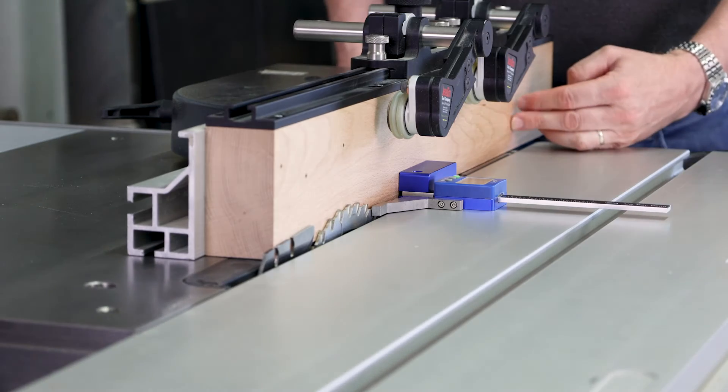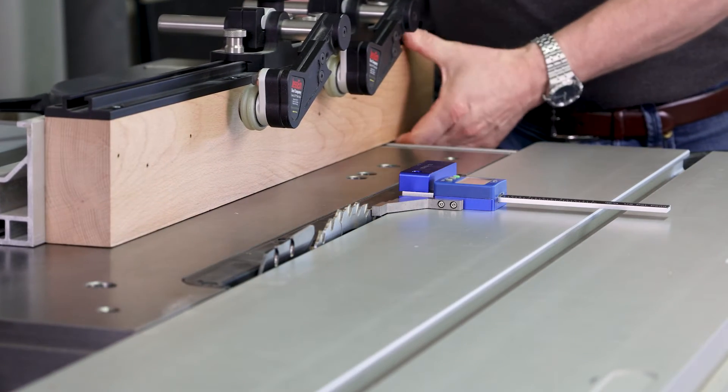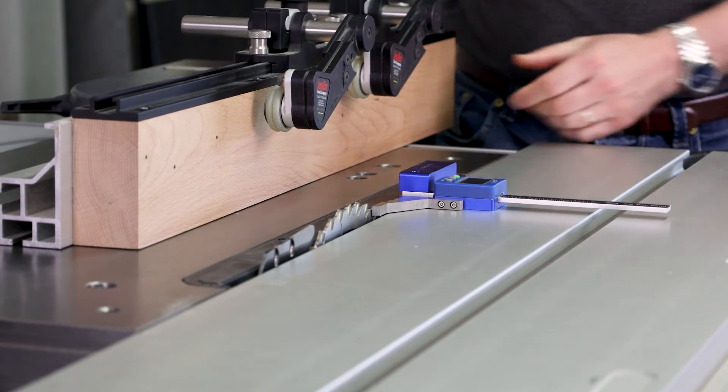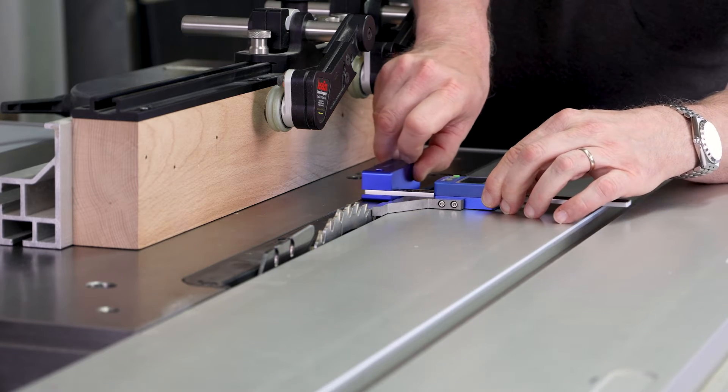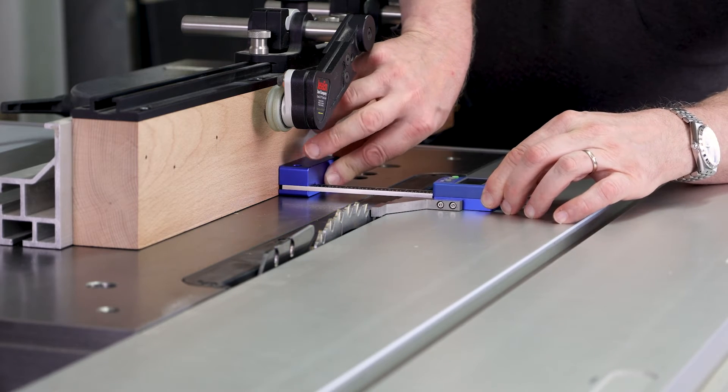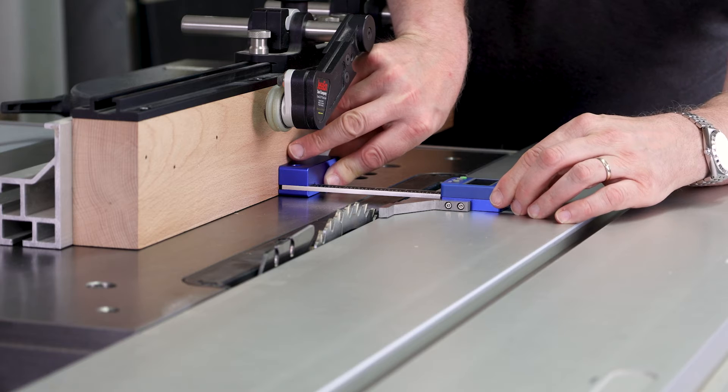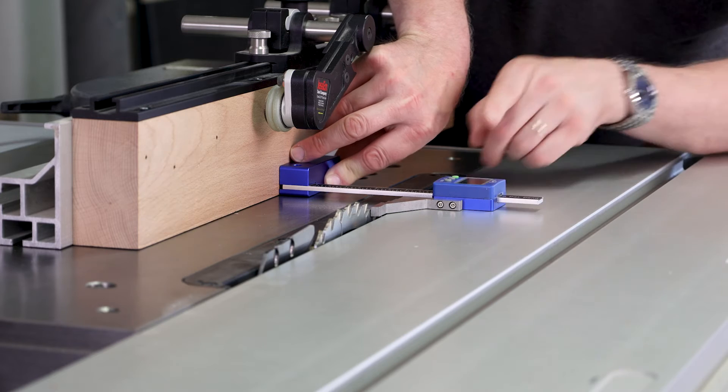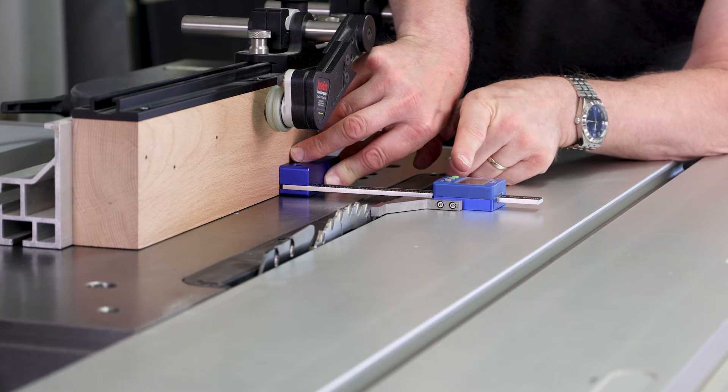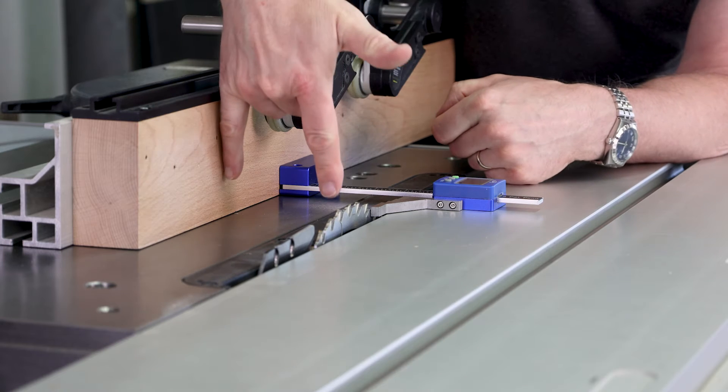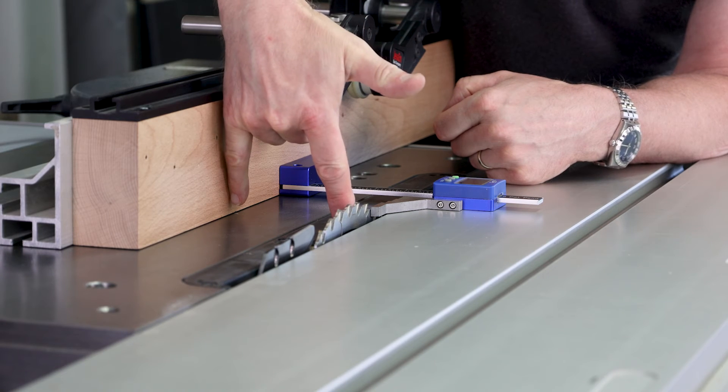If you then want to bring this, let's say to a hundred millimeters, bring it over to roughly a hundred millimeters. And now if you put it up against the fence and the outside the blade, when this is measuring dead on a hundred millimeters, it means it's a hundred millimeters between the blade and the fence.